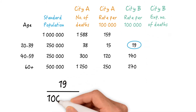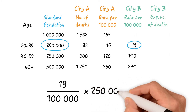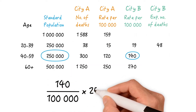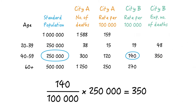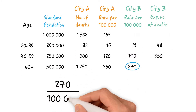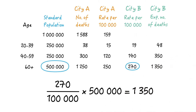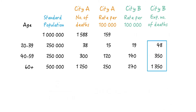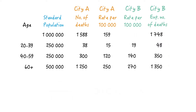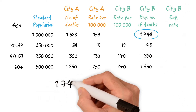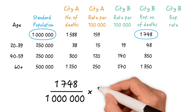19 per 100,000 multiplied by 250,000 equals 48 expected deaths. 140 per 100,000 times 250,000 equals 350 expected deaths. And 270 per 100,000 times 500,000 equals 1,350 expected deaths. Overall, we'd expect 1,748 deaths if city B had the same age distribution as city A. And what would be the overall death rate per 100,000 population?